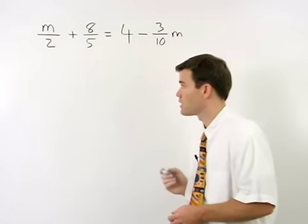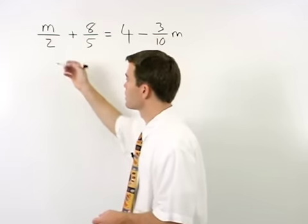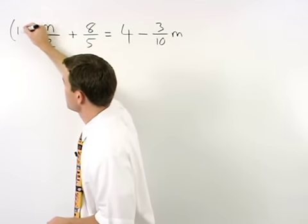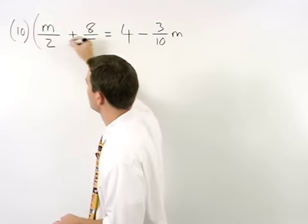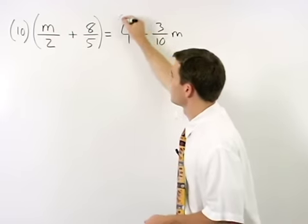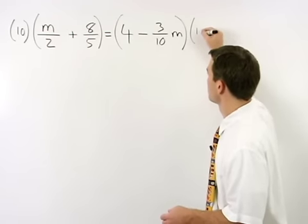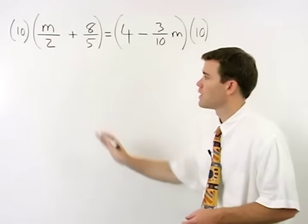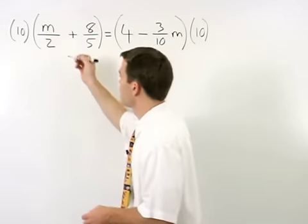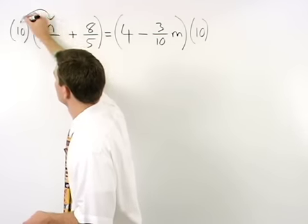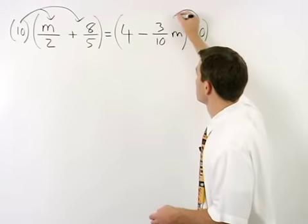So in this equation, to get rid of the fractions, we multiply both sides of the equation by 10. Make sure you distribute the 10 through both terms on both sides of the equation.